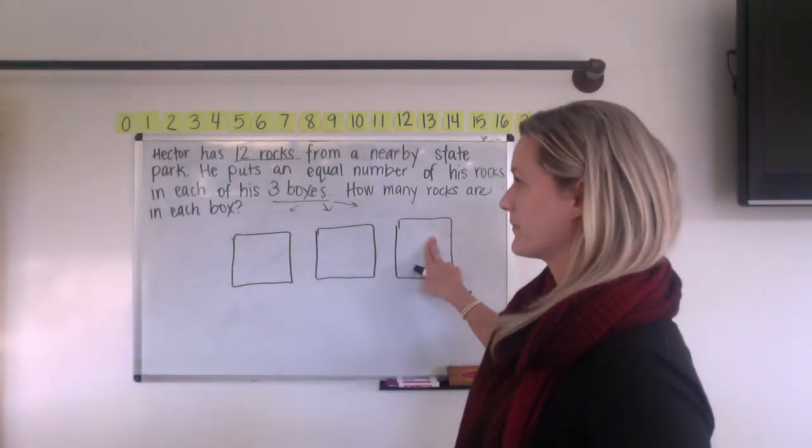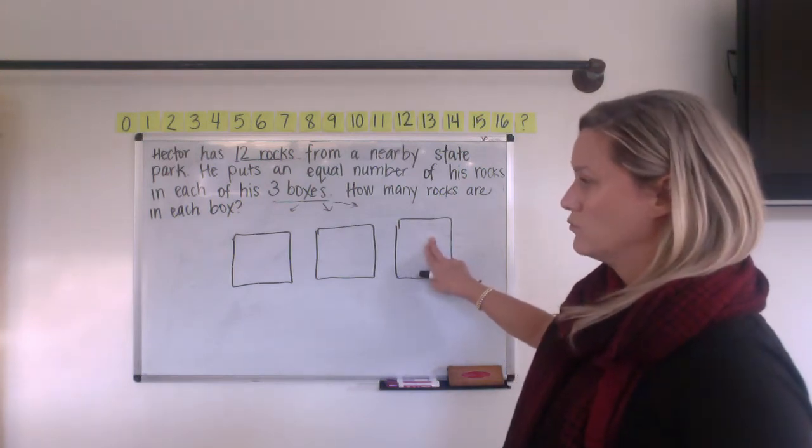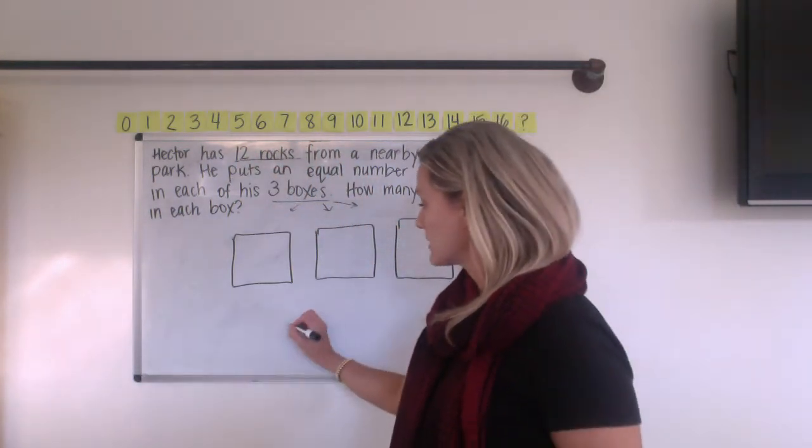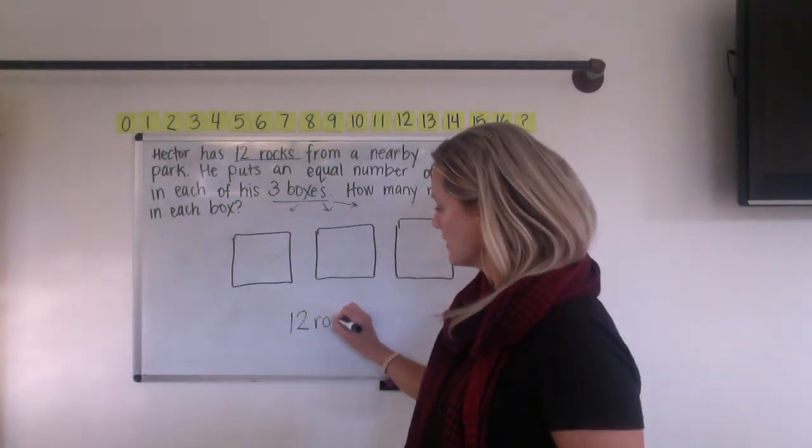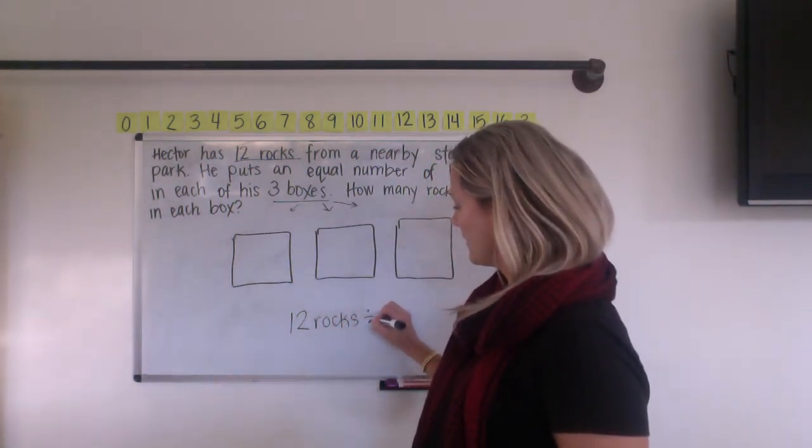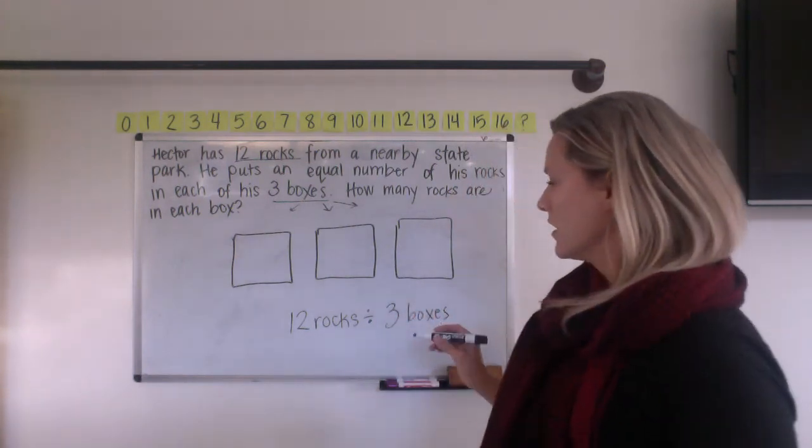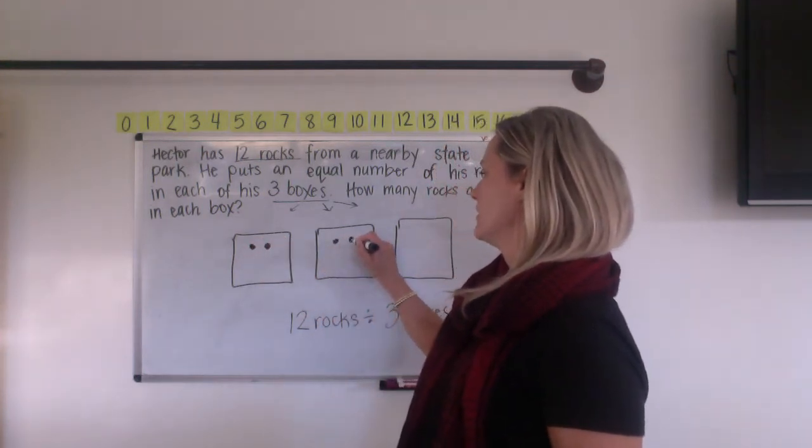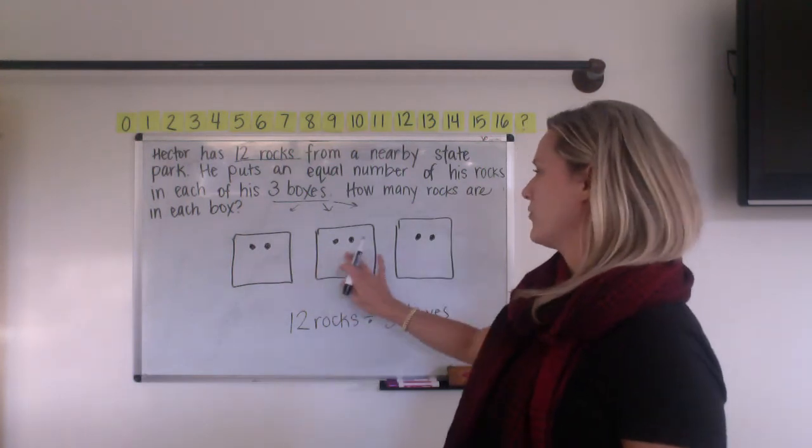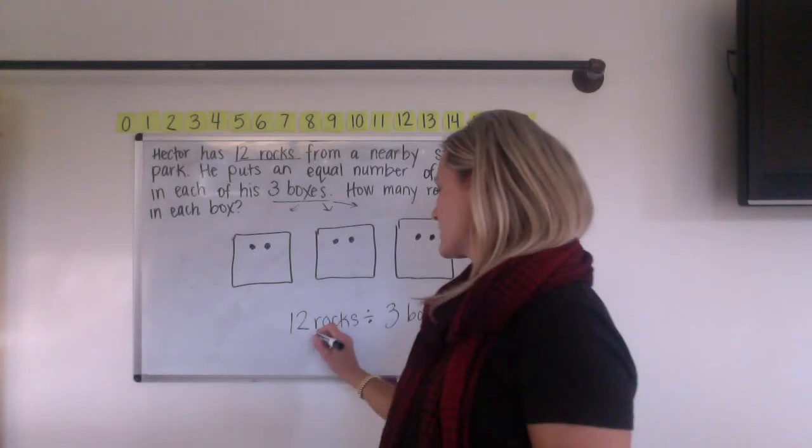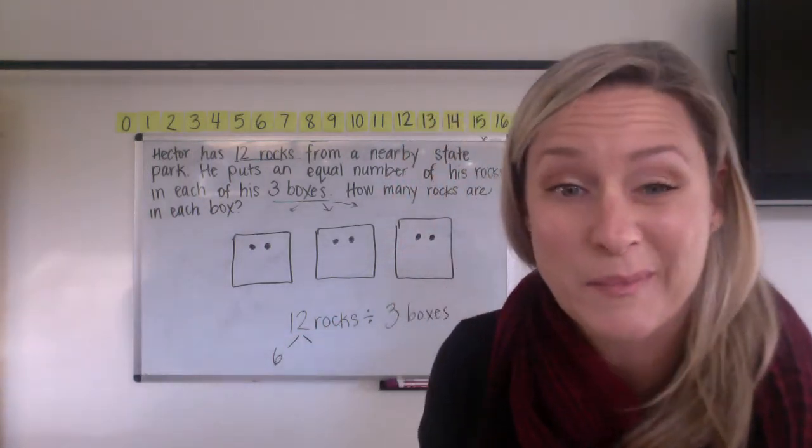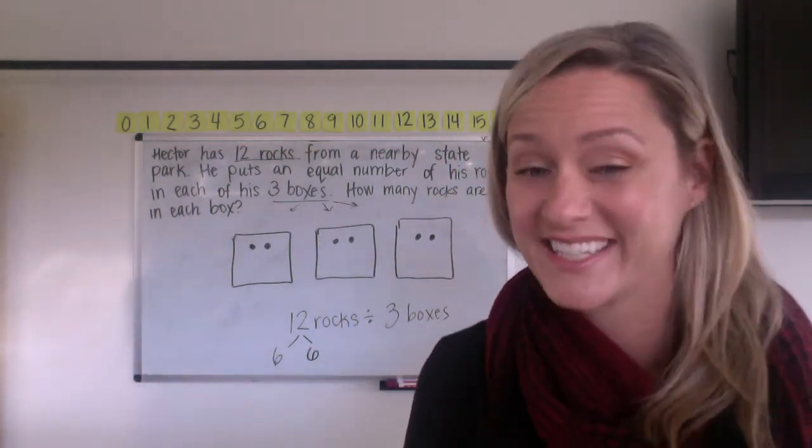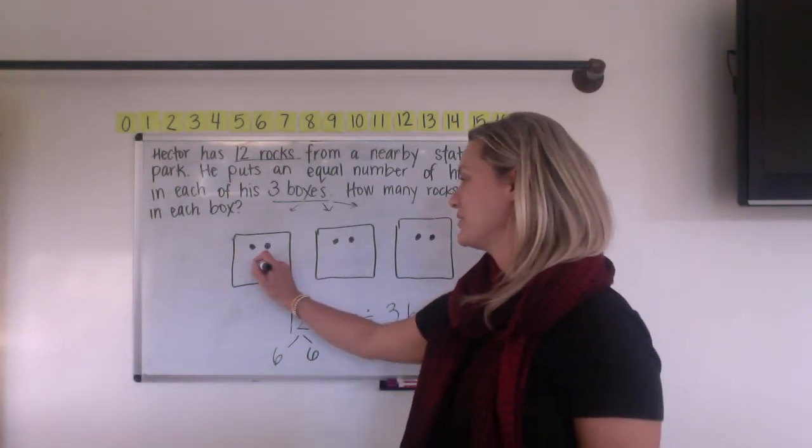Okay. So each box is going to get more than two rocks. So we already said we know it's going to be more than two. Two, four, six. All right. So what does that tell you? We've used up six of the 12. How much is left? We've got another six, you guys. It's kind of like the same thing that happened in another lesson where we had used up exactly half and then we just filled in the other half.